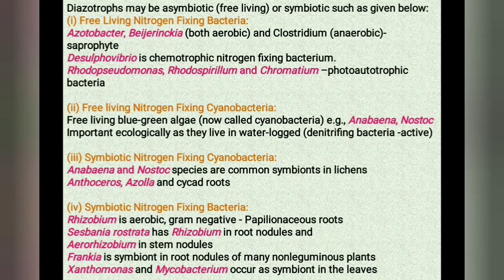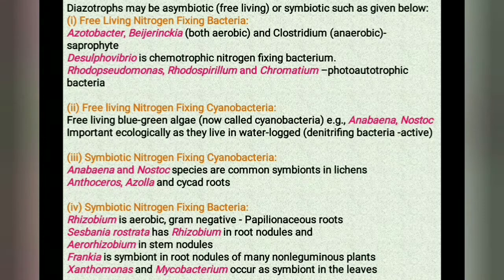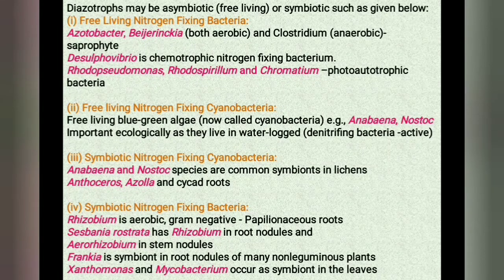Diazotropes may be free-living or symbiotic. The first type is the free-living nitrogen-fixing bacteria. Azotobacter, Beijerinckia and Clostridium are saprophytic bacteria that perform nitrogen fixation. The second type is Desulfovibrio, which is a chemotrophic nitrogen-fixing bacteria.